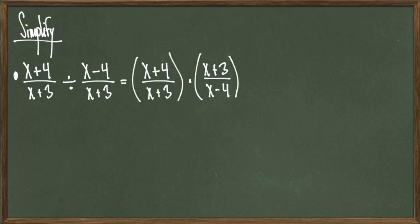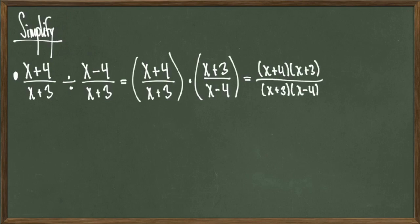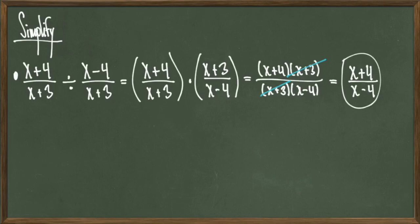Thankfully, fractional multiplication is easy because we can just multiply the numerator by the numerator and denominator by the denominator. This gives me the revised expression x plus 4 times x plus 3 over x plus 3 times x minus 4. The only common quantity is x plus 3 because it appears in the numerator and denominator, so we can cancel it out to get a final answer of x plus 4 over x minus 4, and we're done.